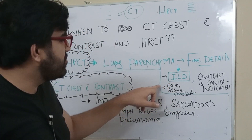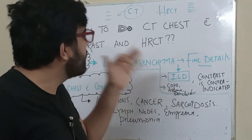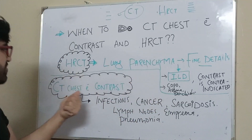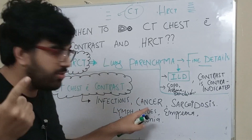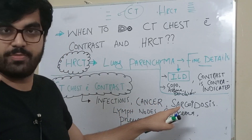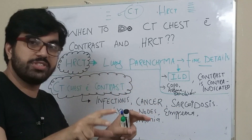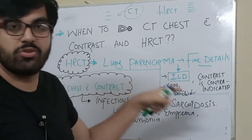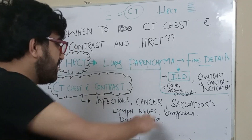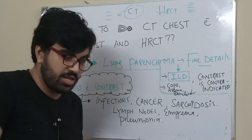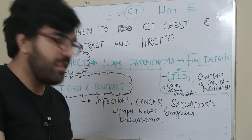CT with contrast is the answer for infection, cancer, and sarcoidosis when you want to look at bilateral hilar lymphadenopathy. If a patient presents with bilateral lymphadenopathy and you suspect sarcoidosis, you should go for CT with contrast. It is also indicated for pneumonia.